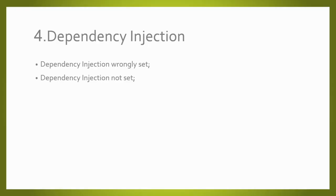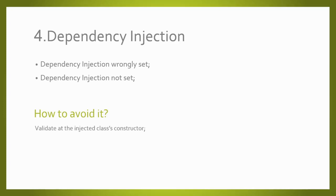Our last scenario is regarding dependency injection. Anyone who uses dependency injection has surely been through this scenario. It happens when we forget to set up the dependency injection, or do not set it up correctly. When we try to access the injected object's properties or methods, it throws the exception. In this case, the best practice is to always validate the injected object in the class's constructor.